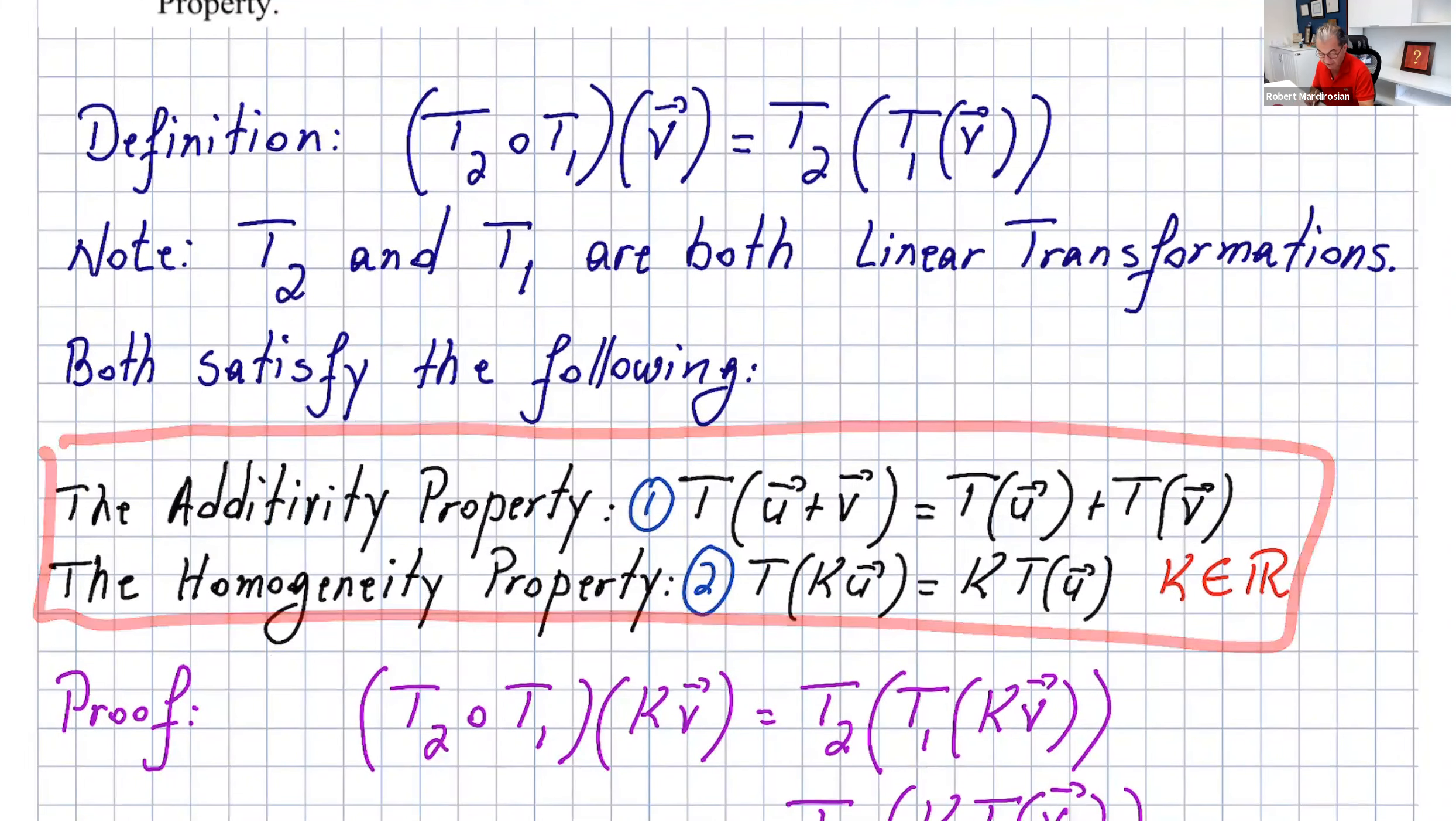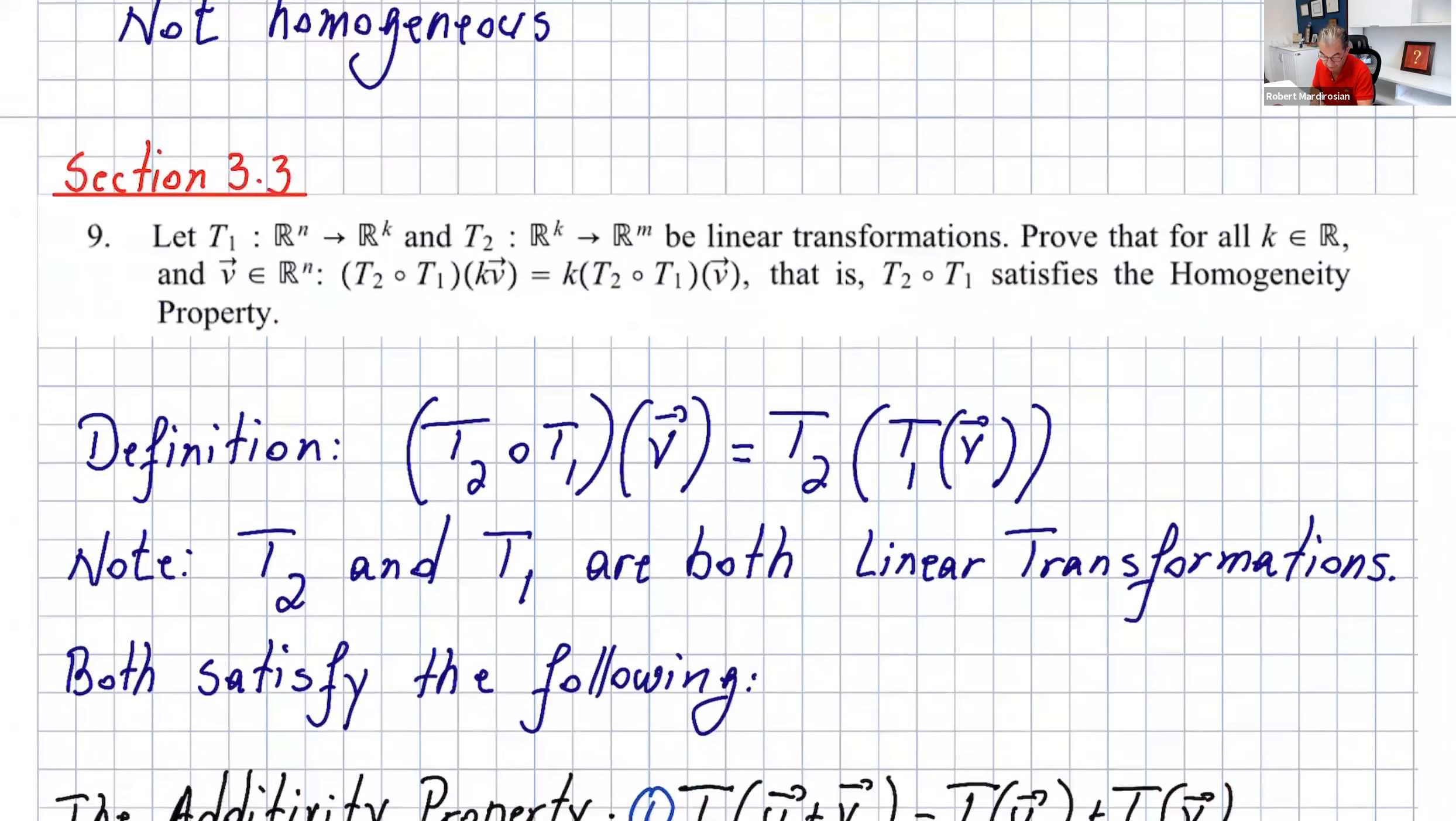Let's see what it says. We want to see if T₂∘T₁(kv) is the same as k(T₂∘T₁)(v), so if that satisfies the homogeneity property.